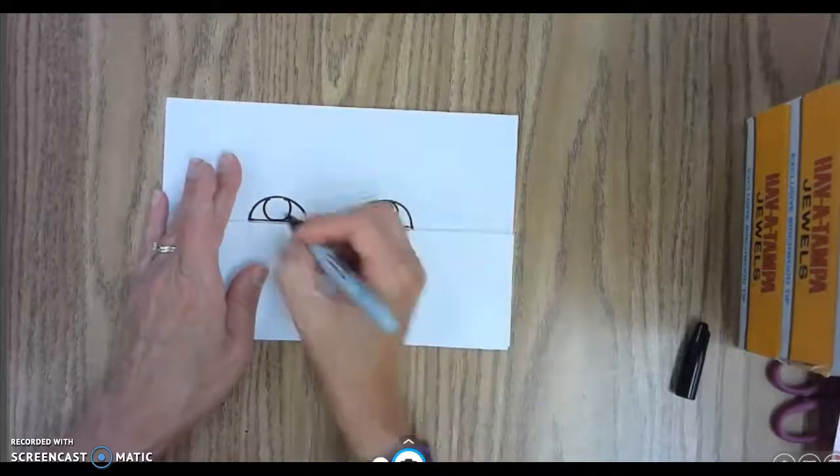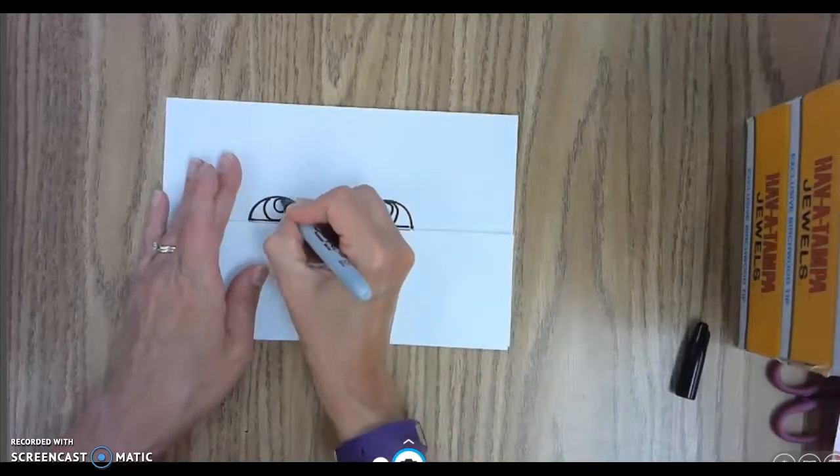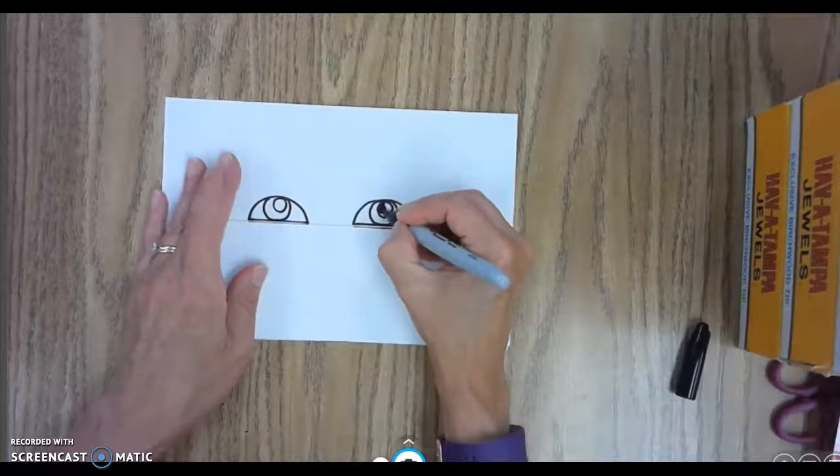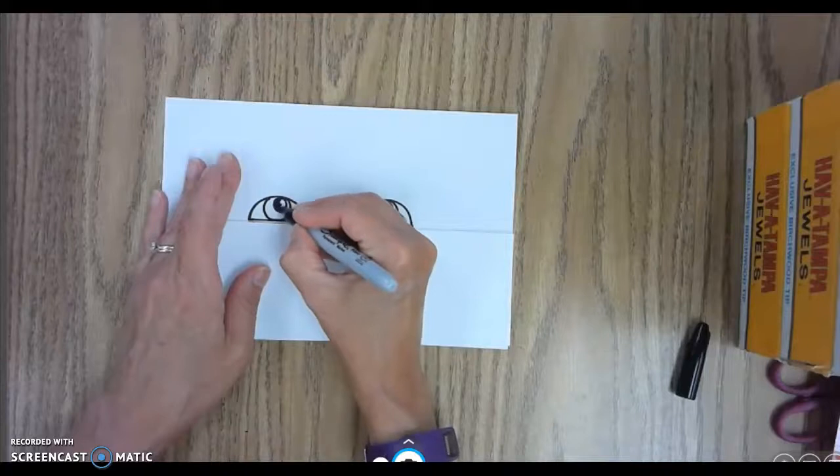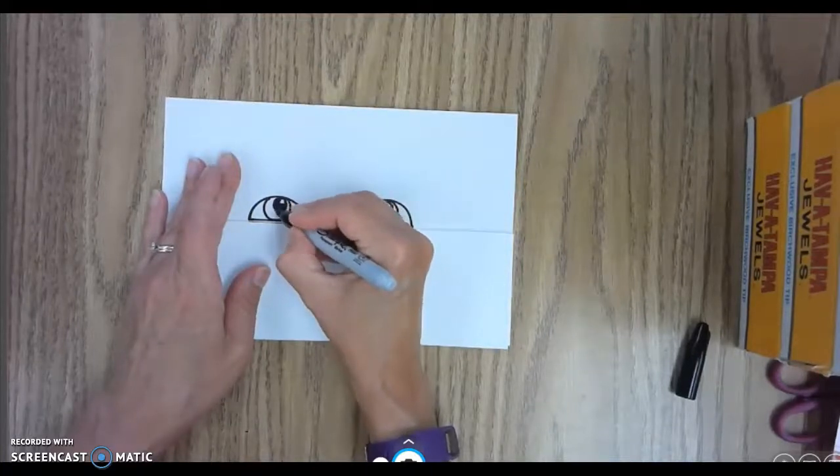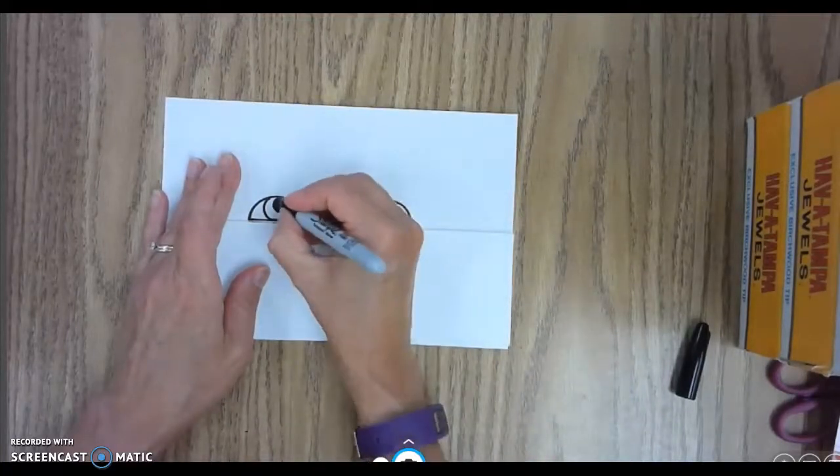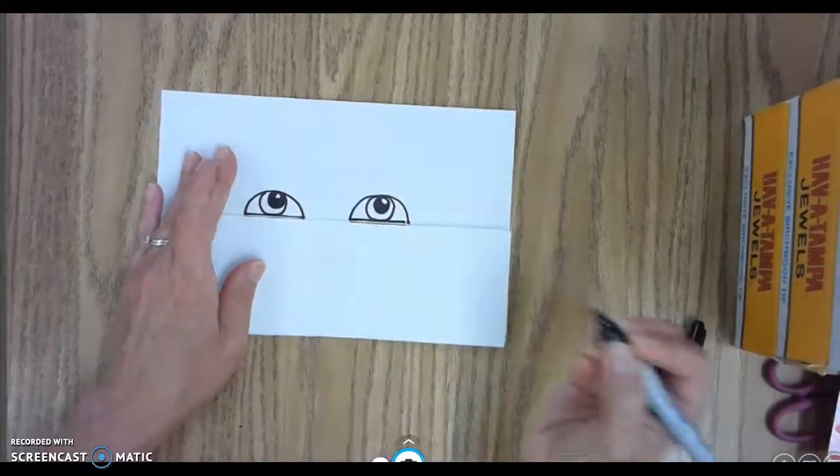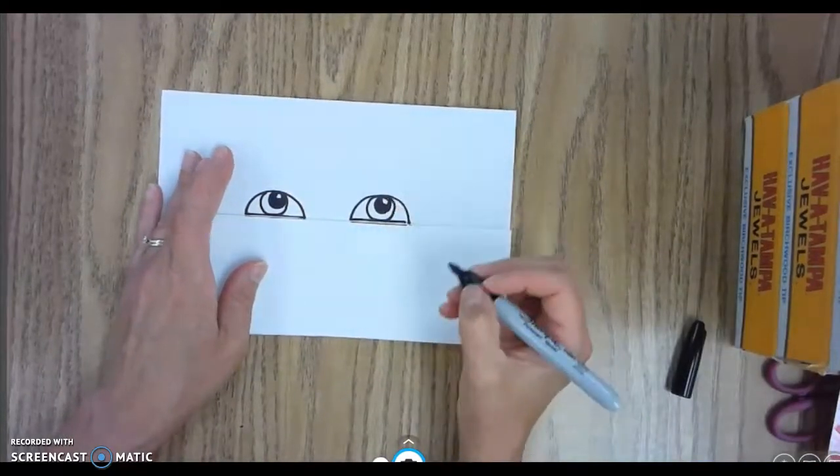We're going to make the iris of our eye, that's the colorful part, and a smaller circle inside, that's a pupil. Another one on this side and the pupil. And I'm going to color this part in. I'm going to leave a little tiny bit that's not colored in, that's my light catcher. Always leave a little white spot in the eyeball.